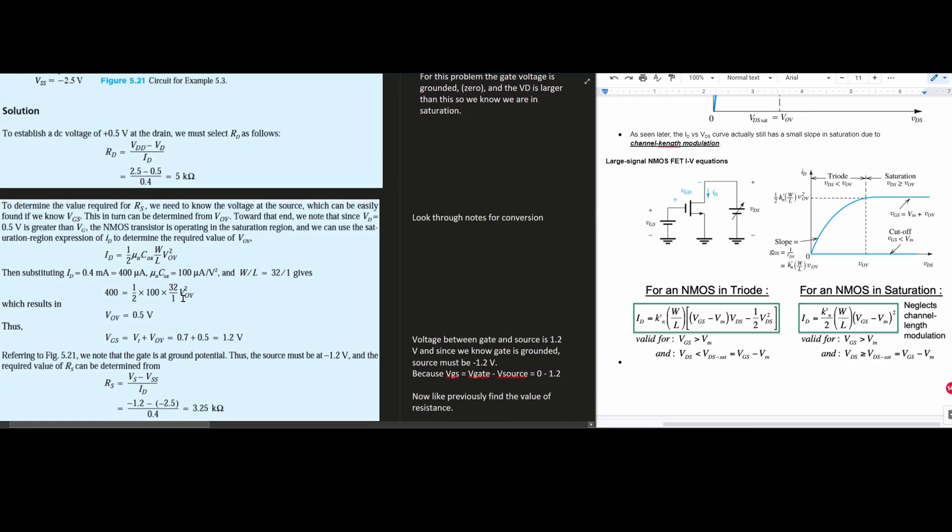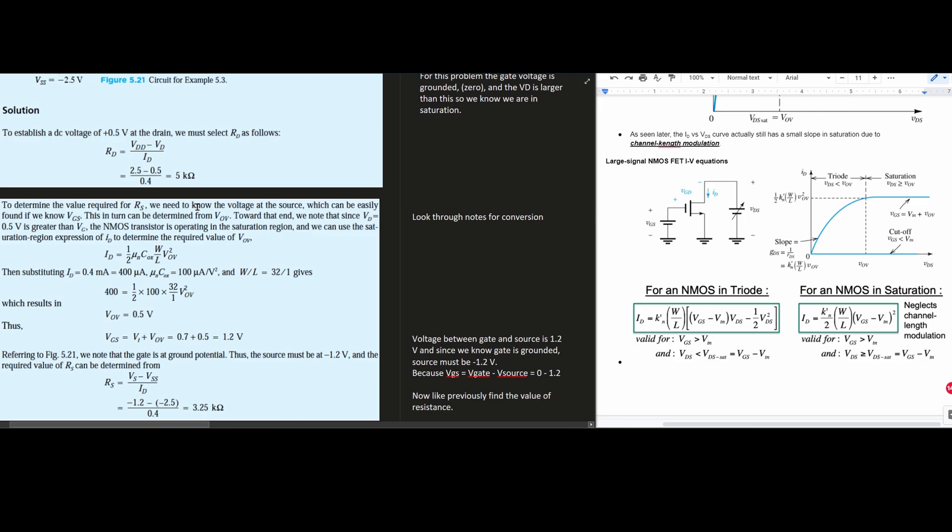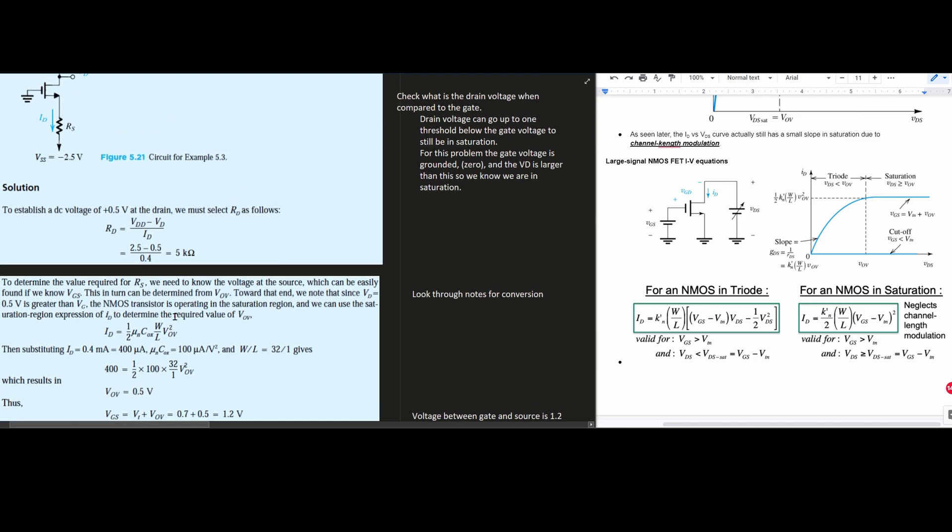Now we need to find RS. To determine the value required for RS we need to know the voltage at the source. This can be easily found if we know VGS. This in turn can be determined from VOV. Since VD equals 0.5 is greater than VG, the NMOS transistor is operating in the saturation region and we can use the saturation region expression of ID to determine the required value of VOV.